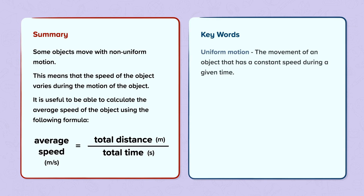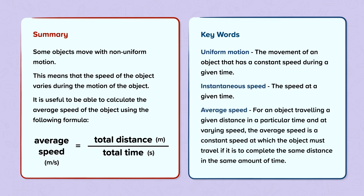Keywords. Uniform motion: the movement of an object that has a constant speed during a given time. Instantaneous speed: the speed at a given time. Average speed: for an object travelling a given distance in a particular time and at varying speed, the average speed is a constant speed at which the object must travel if it is to complete the same distance in the same amount of time.